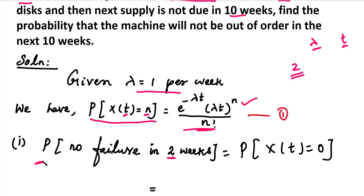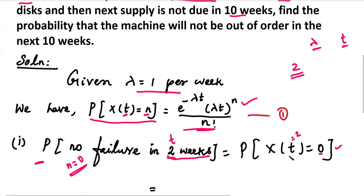In the first subdivision, we want the probability of no hard disk failure in a 2-week period. So t = 2 and n = 0 (no failure). We substitute n = 0, t = 2, and lambda = 1 into the Poisson formula.